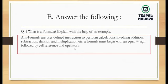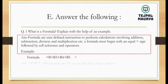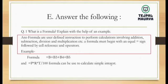An example of a formula is: =B2+B3+B4+B5. Another example: =P*R*T/100, which can be used to calculate simple interest. Functions like SUM and AVERAGE are also a type of formula. This is the answer to question number 1.